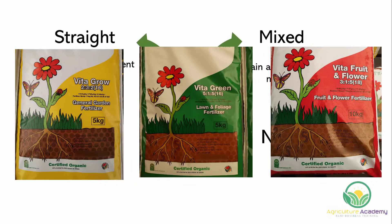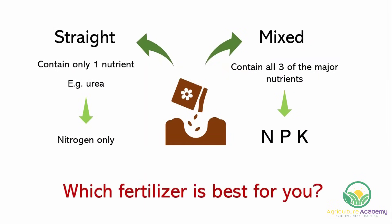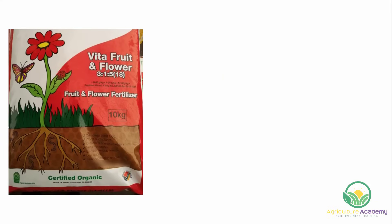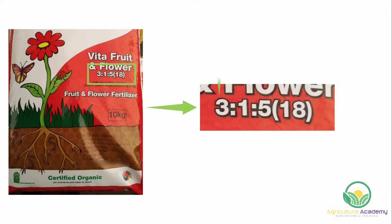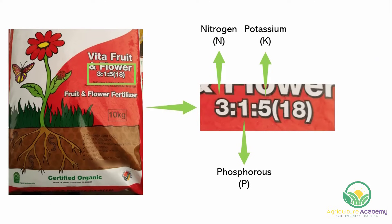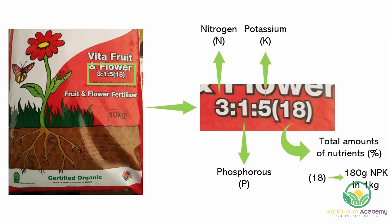However, there are so many different mixtures and concentrations — how do you know which fertilizer is best for you? First, you need to know what the three large numbers on the front of the bag mean. These numbers describe the ratio of the nutrients present in the mixture. The first number refers to the nitrogen concentration, the second to phosphorus and the third to potassium. The number in brackets describes the total amount of nutrients present in the bag as a percentage. For example, if the number in brackets is 18, then in 1 kilogram of that fertilizer there is 180 grams of nitrogen, phosphorus and potassium combined. The remaining weight is made up of other constituents, like lime.